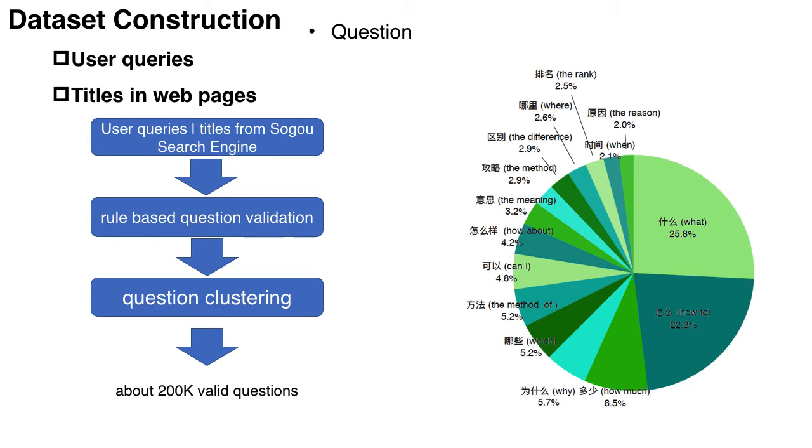Finally, we use clustering to remove some redundant questions. After all this process, we get nearly 200,000 valid questions, and the distribution of some question words is shown on the right.